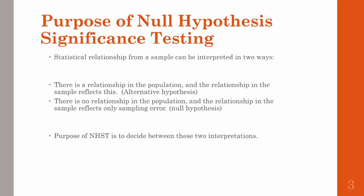When we talk about the purpose of null hypothesis significance testing, we can think about it in two ways. First, there is a relationship in the population and the relationship in the sample reflects this — this is our alternative hypothesis. The second is there is no relationship in the population and the relationship in the sample reflects only sampling error — this is our null hypothesis.